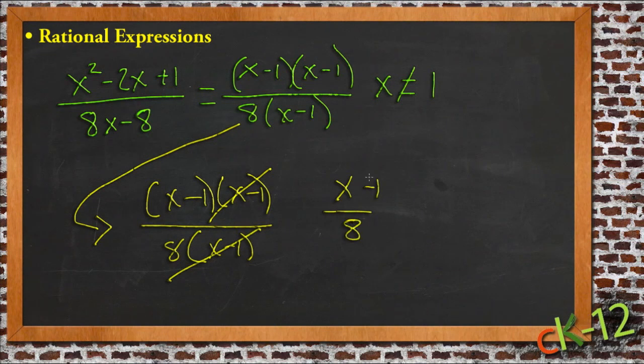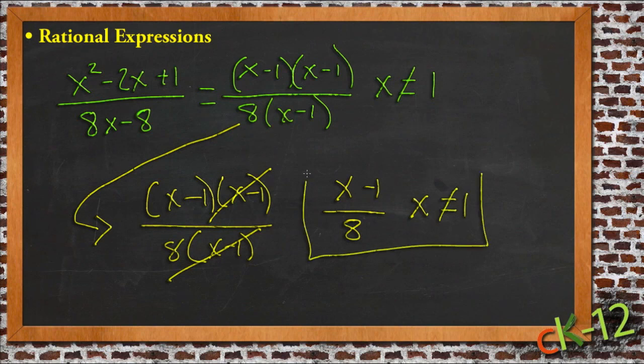So we need to, as we're writing our simplified version, we need to say that the final simplified description of this is x minus 1 over 8, where x is not equal to 1, because that takes into account the original sort of lay out the original version of that expression.